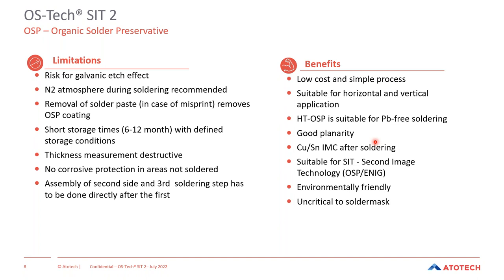Nevertheless, there are also a number of benefits, and this is why OSP is used in high volume. The most important is that it's a low-cost process — cheap compared to all other final finishing processes. It is a very simple, short-processing-time process, easy to handle and suitable in both horizontal and vertical applications. It provides very good planarity of the coating with good coverage of the copper underneath. The organic is removed during assembly, so the IMC is formed with the copper directly, which leads to a very reliable solder joint.